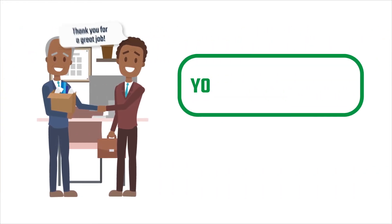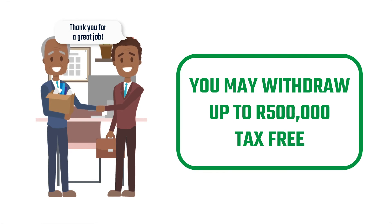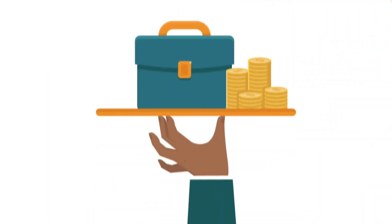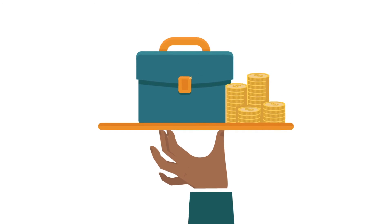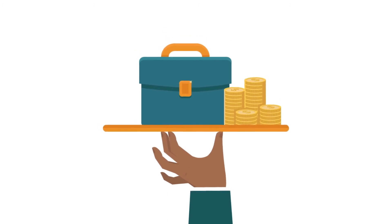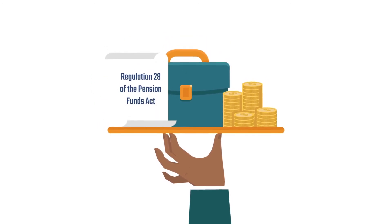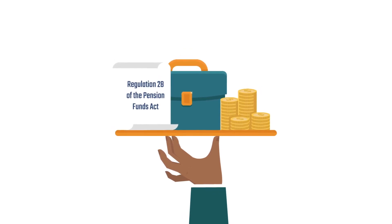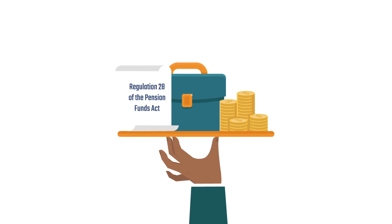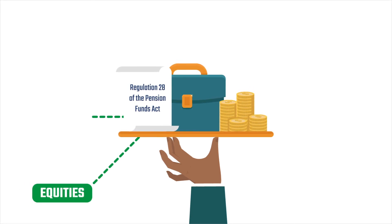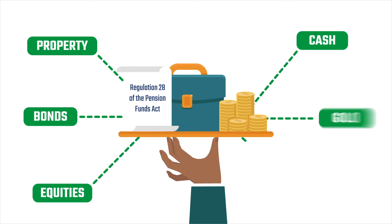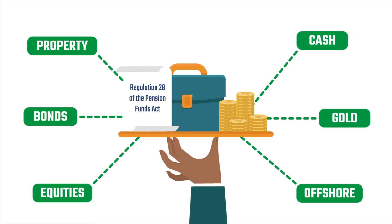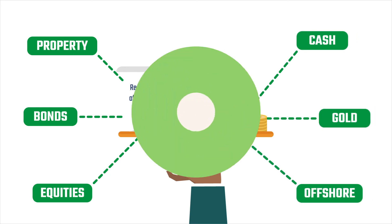At retirement age, you may withdraw up to 500,000 rand from your retirement annuity account tax-free. Your money is invested in a portfolio that is compliant with Regulation 28 of the Pension Funds Act, to ensure it is invested prudently across a number of asset classes, such as equities, bonds, property, cash, gold and offshore, while growing your money over the long term.